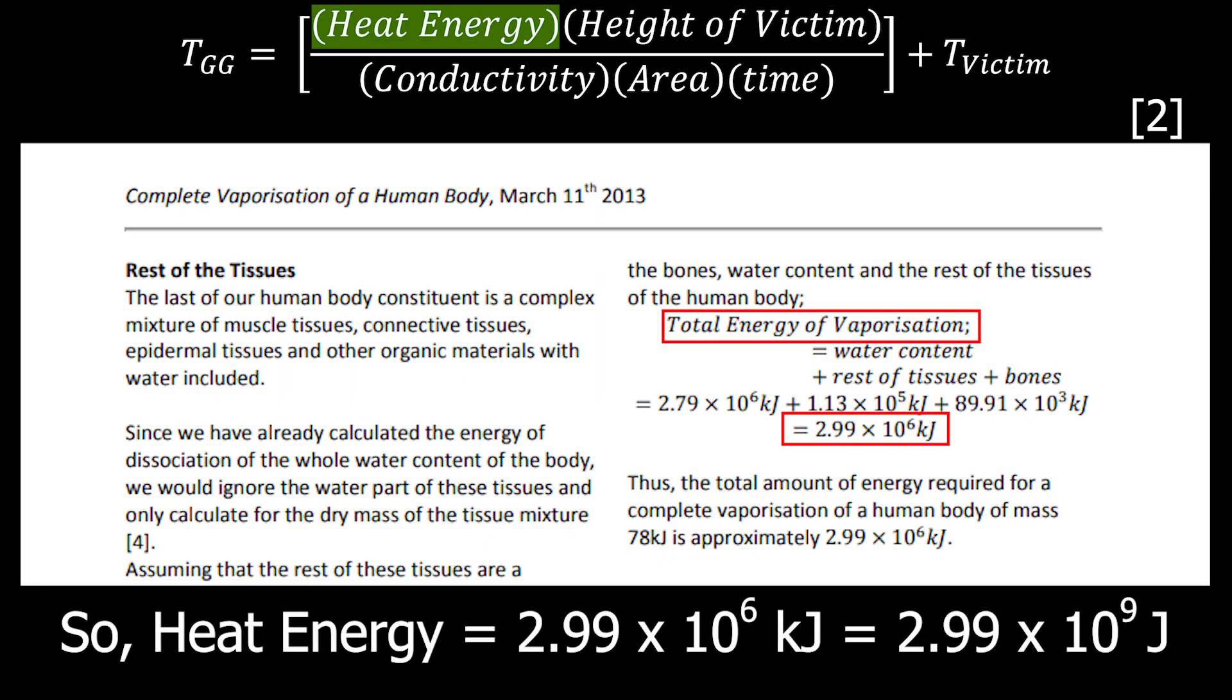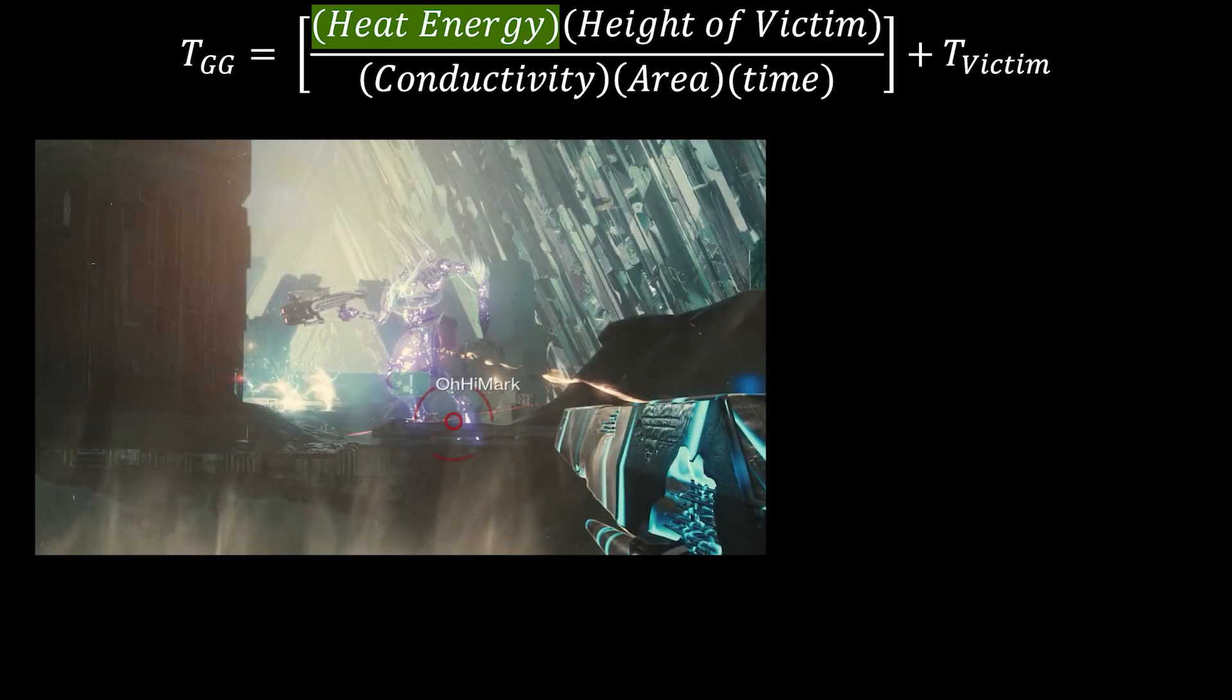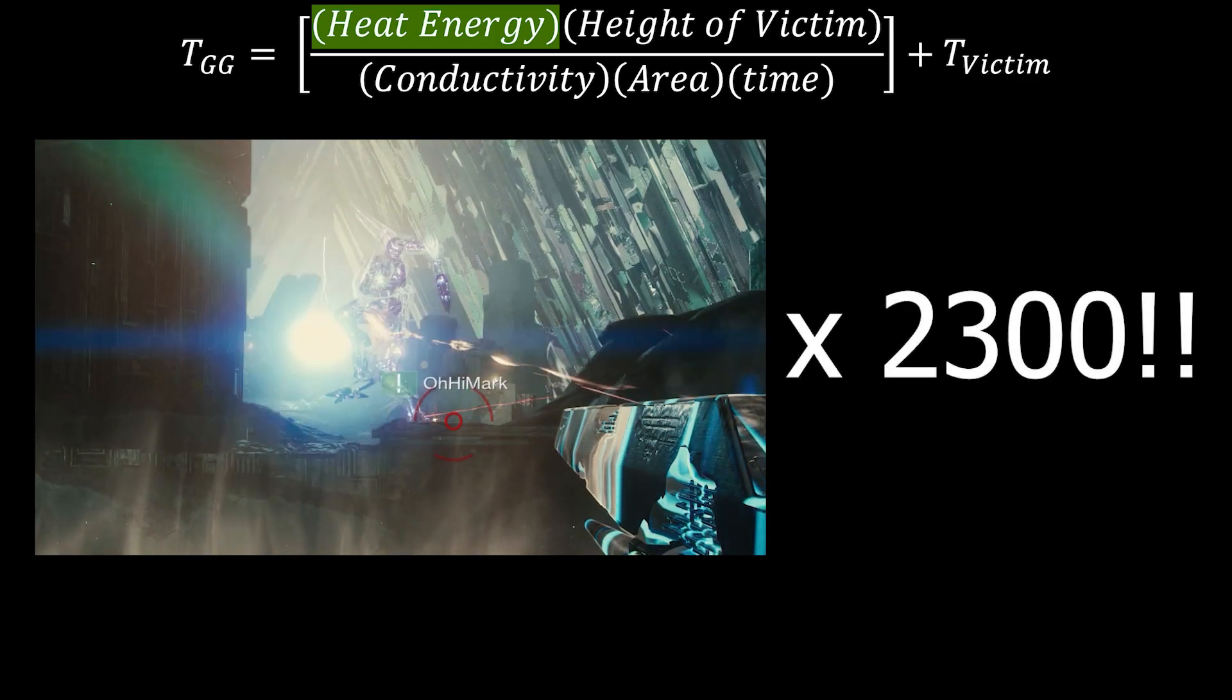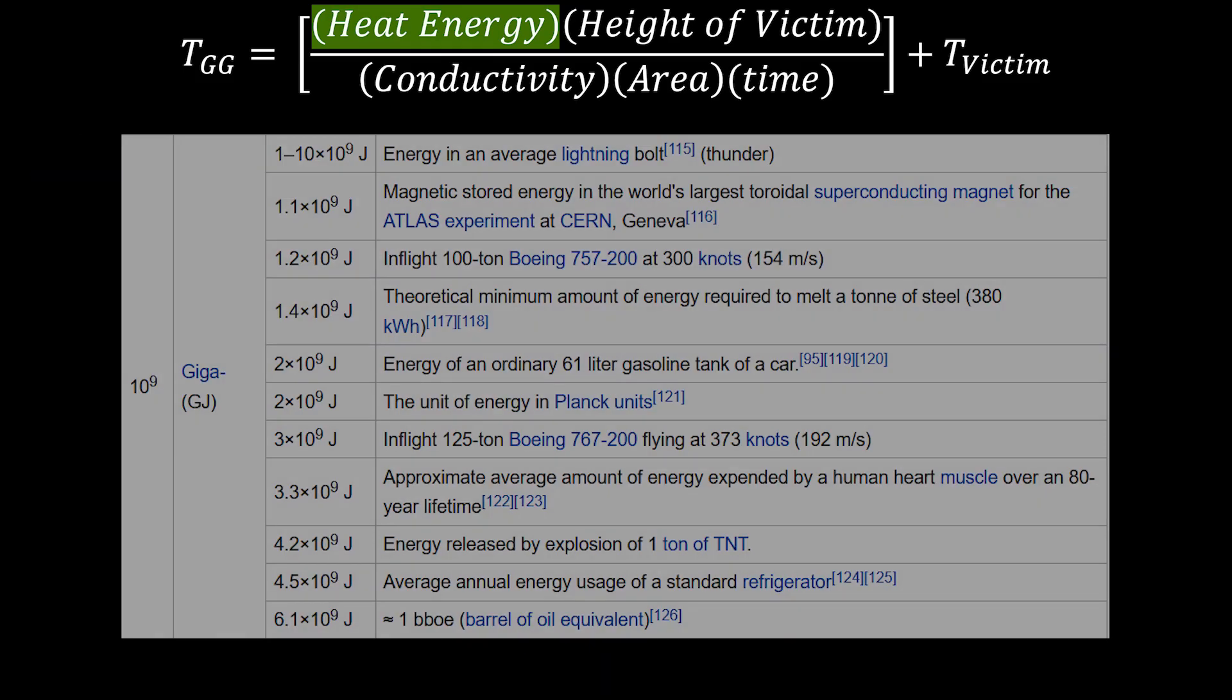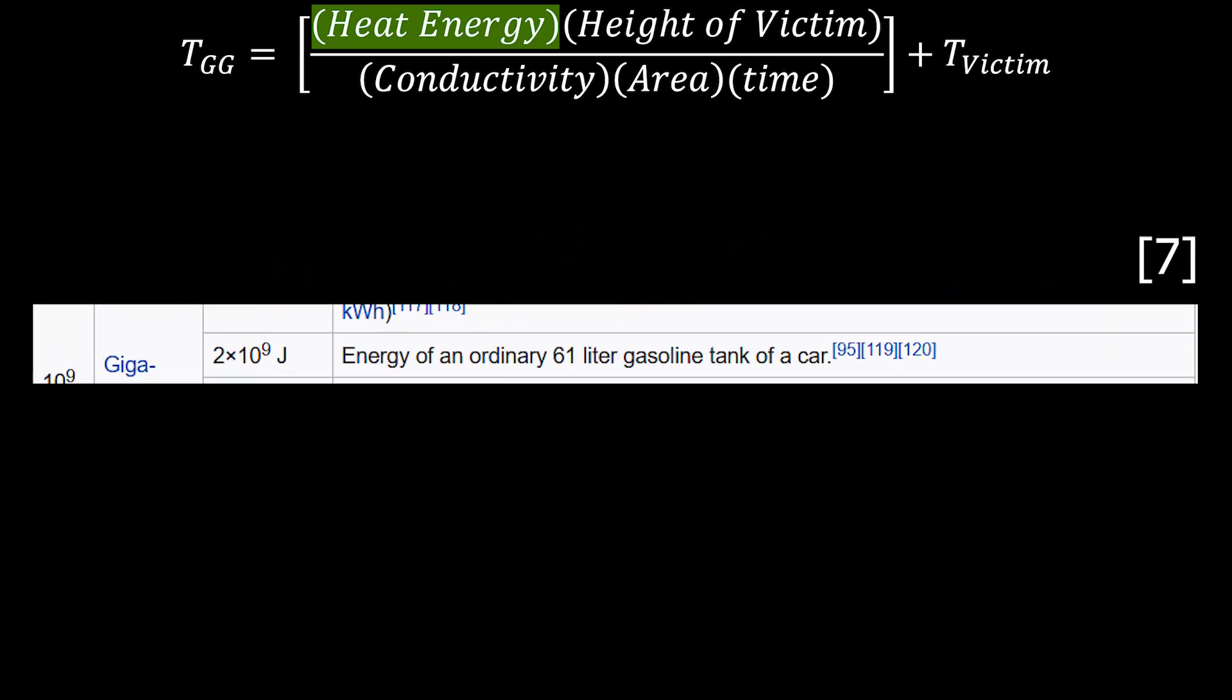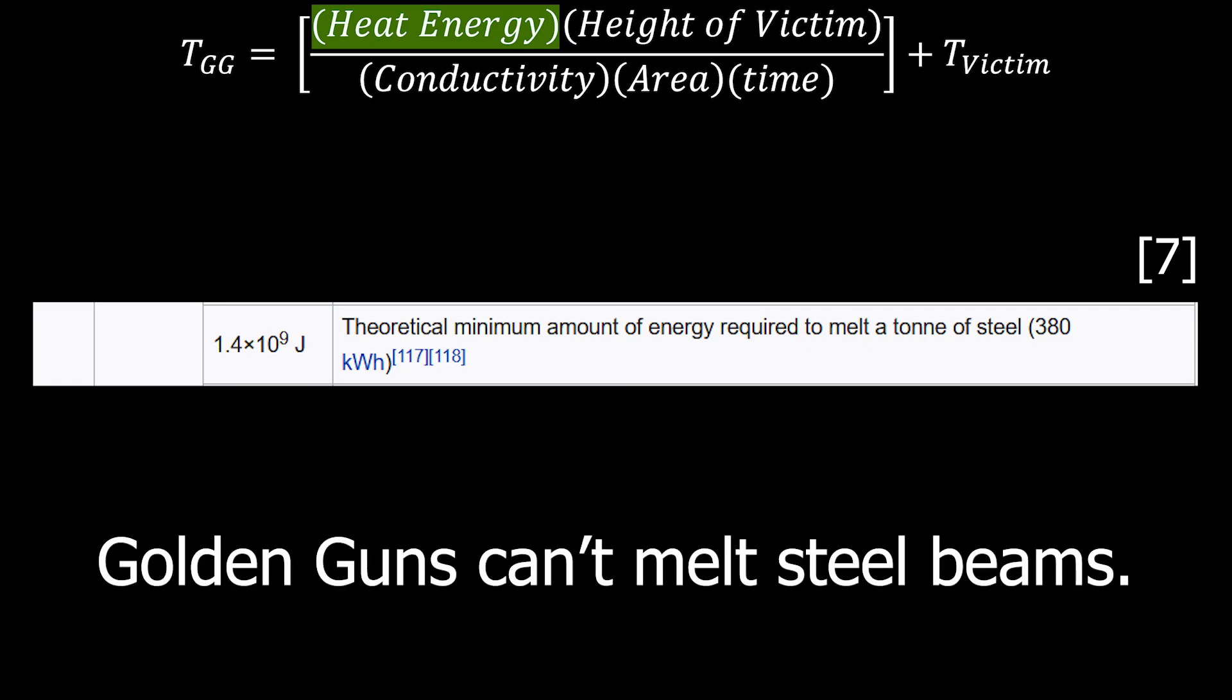As you can see, they reached a final energy of about 2.99 times 10 to the 6 kilojoules, or about 2.99 billion joules. That is a lot. It's over 2300 times the yeet energy of Atheon's stomp, and that's what you call a callback, kids. Just over half the energy of one ton of TNT exploding, and over twice the energy needed to melt a ton of steel. So, there you have it. Golden guns can melt steel beams.